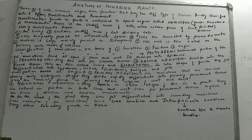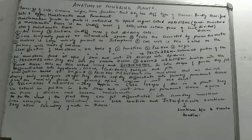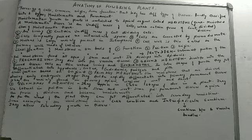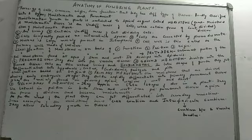The word 'meristem' comes from a Greek word 'meristos' — M-E-R-I-S-T-O-S — which means 'divided.' So the special regions in a plant where continuous growth occurs are called meristems, derived from this Greek root meaning divided.